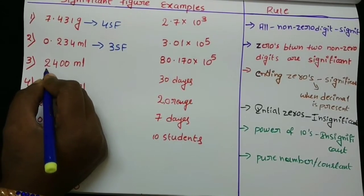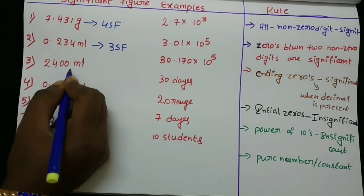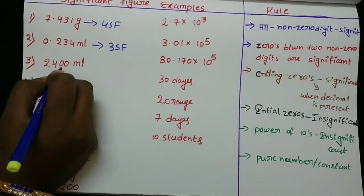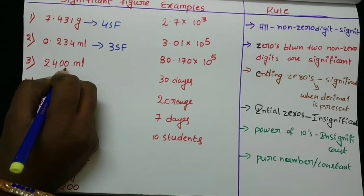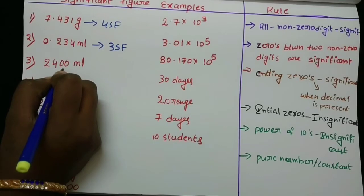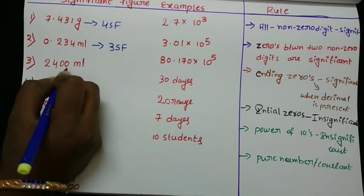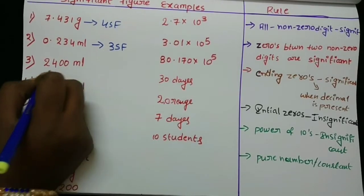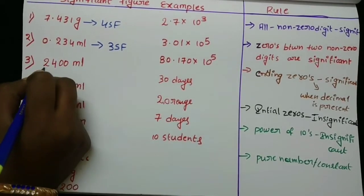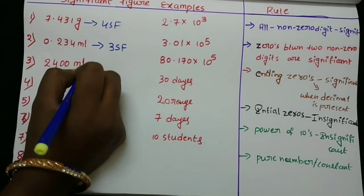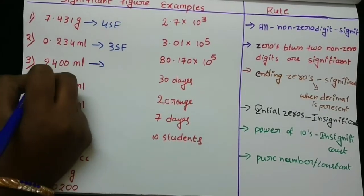2400 ml — ending zeros would be significant, but no decimal is present, so the ending zeros are not significant. Here there are two significant figures.